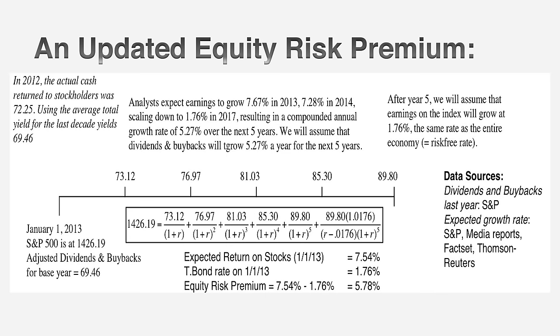What I'd really like is an equity risk premium looking forward, and there's a way to do it. To get a sense of what's involved: you know how to compute the yield to maturity on a bond — you take the price of the bond, the coupons as cash flows, include the face value, and the yield to maturity is the discount rate that makes the present value of cash flows equal to the price. We do this with fixed income all the time. Now let's assume we can do this with equities. Instead of buying a bond, let's say you bought the S&P 500 at the start of 2013 — that would cost you 1,426.19. Instead of coupons, what do you hope to get?